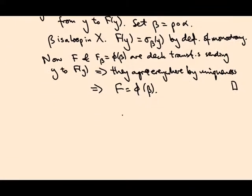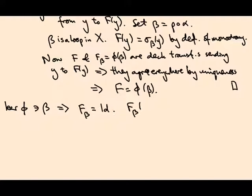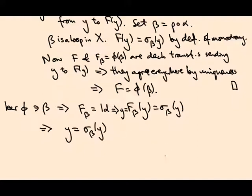What about the kernel? Suppose β is in the kernel of φ. That means Fᵦ is the identity. Fᵦ sends y to σᵦ(y), so if this is the identity, then σᵦ(y) = y. In other words, if I take the unique lift of β that starts at y, it also ends at y.